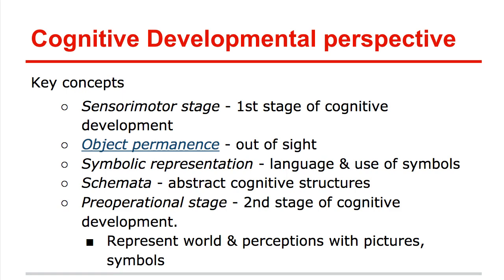Then we develop into symbolic representation — our use of language and symbols, and the understanding that I can substitute a symbol for language. Holding up an apple or pointing to a picture of an apple to indicate you want one. Many parents use sign language as a way to communicate when language use is not fully developed — using symbols in lieu of language. We also see the development of schema or schemata — those abstract cognitive structures, the narratives and stories we tell ourselves. The brain is making sense of the world and the child starts to develop and tell stories in their head.